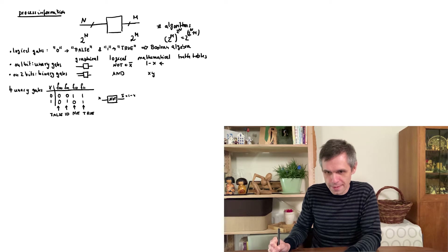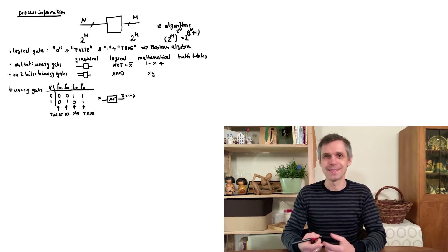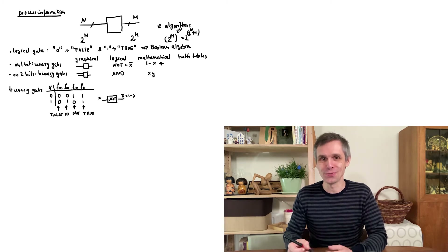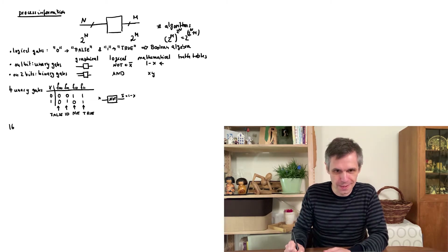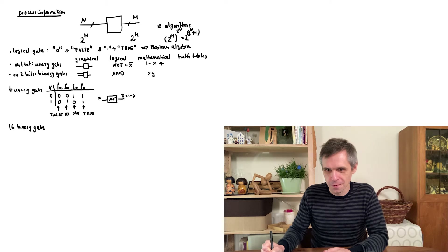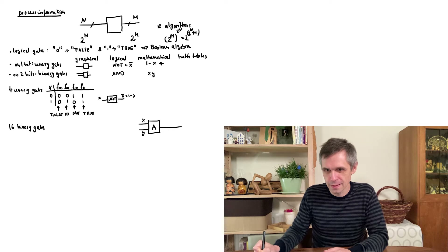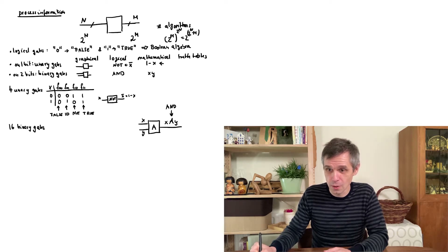In principle there are 16 binary gates, but we are going to focus on just a few. They all take two inputs which we can denote as x and y, and logically we often denote the output as x ∧ y, where the operation could be AND, OR, exclusive OR, or NOT AND.